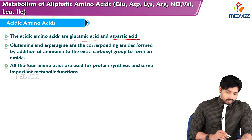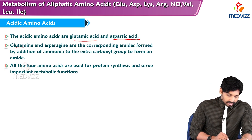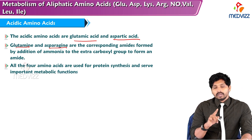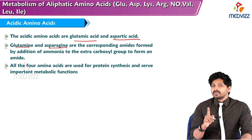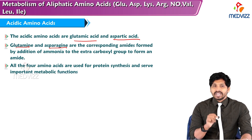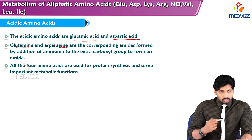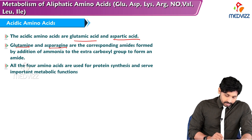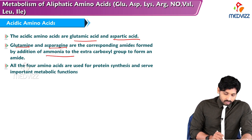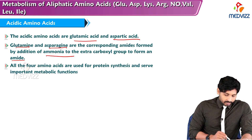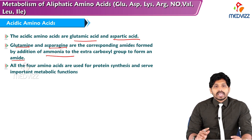The amide forms of these amino acids are glutamine and asparagine. Glutamine's role we have already seen in previous videos in detoxification of ammonia from the brain. Asparagine is also the aminated form of aspartic acid, formed when ammonia is added to the extra carboxyl group to form an amide.